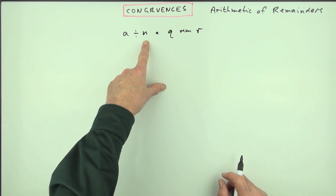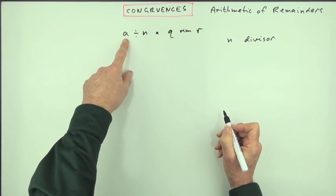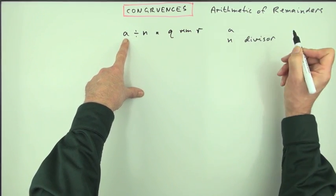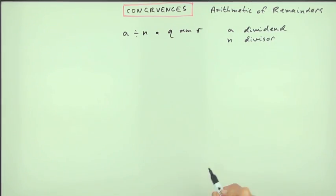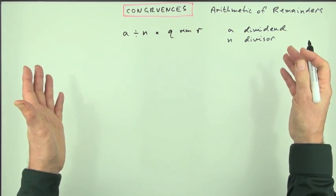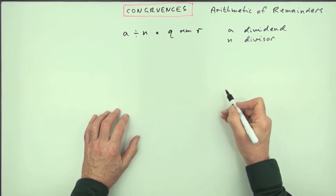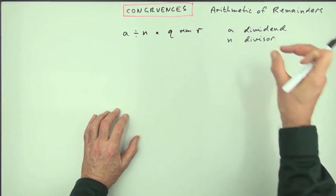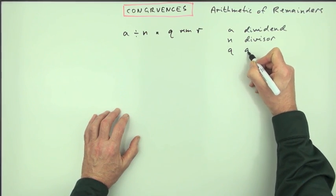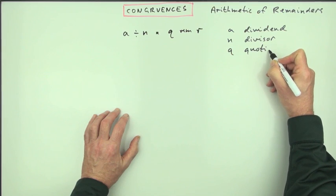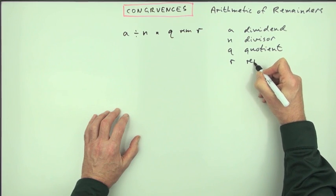Each of these parts has got a name. The number you're dividing by is the divisor. The number you're dividing it into, that's the A in this case, is the dividend. The number of times it goes in, the number of times you can take N out of it is Q, which is called the quotient. And if there's anything left over, that'll be R, which is the remainder.